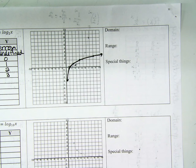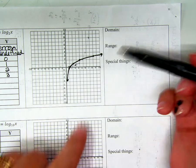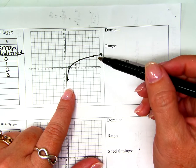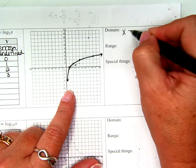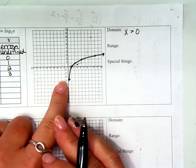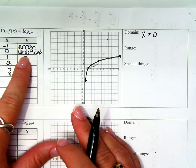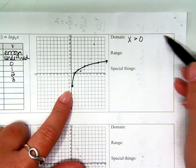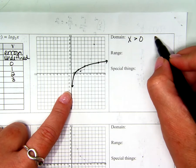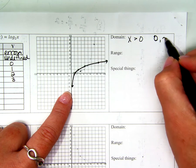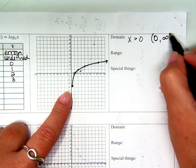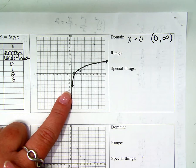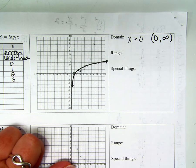So, what about the domain? Any ideas on the domain? Very good. Here's what she said. X is greater than zero. Does it get to zero? Now, we already said that it's undefined there. So, it doesn't get to zero, but it's everything greater than zero. So, what does the interval notation look like? So, zero to infinity, and you want to specify a parenthesis on each end, don't you? Very good.